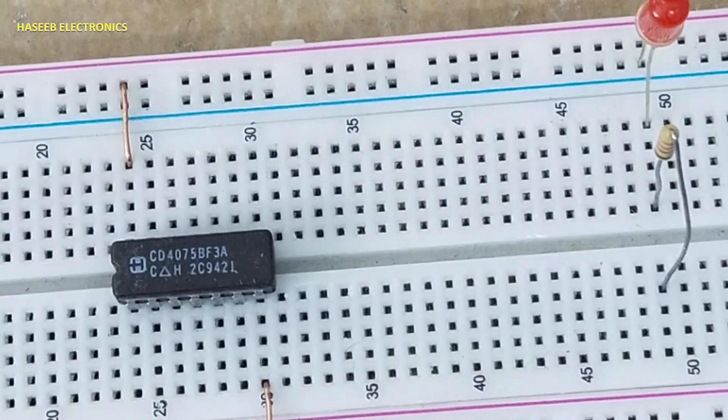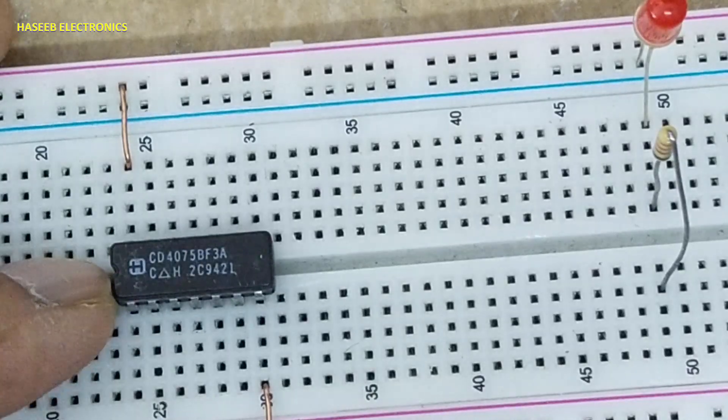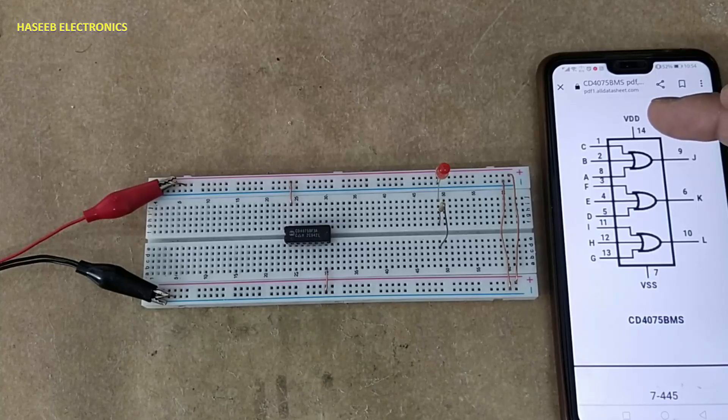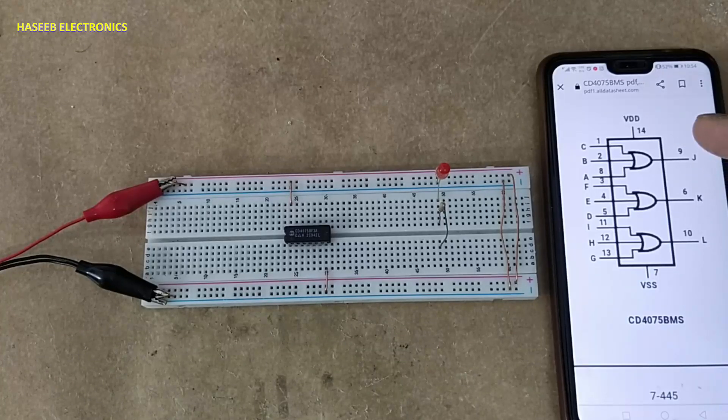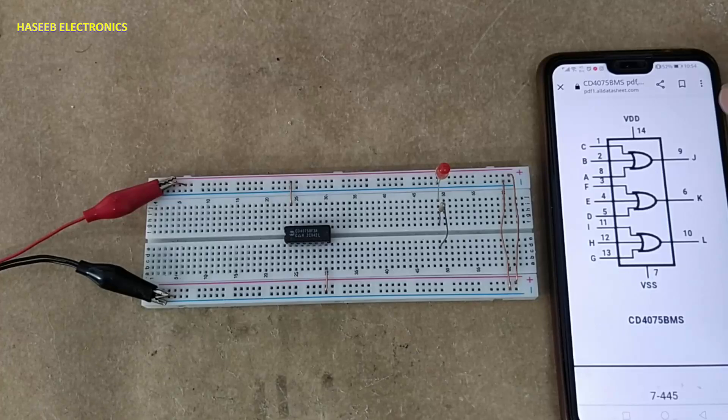Assalamu alaikum warahmatullahi wabarakatuhu friends, welcome back to my channel. CD4075 is a triple three-input OR gate. Pin number 14 is VDD, pin number 7 is ground. It is a CMOS IC, three volts to 15 volts can be provided at the input supply pin.